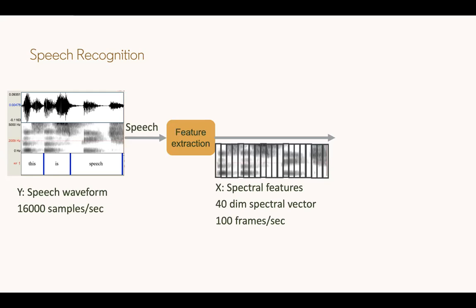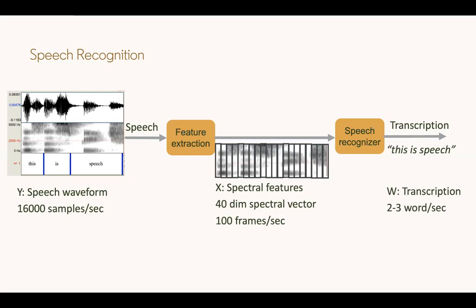We can think of the speech frame much like an image frame being the unit of a video — here, the speech frame is the unit of a speech sequence, an acoustic vector sequence. These 40-dimensional spectral vectors are actually log spectral energies. This sequence of 40-dimensional spectral vectors, which are the features of speech, are sent to a speech recognition system, which then produces the final transcript. If the speech recognition system gets this right, it would output the sentence 'this is speech,' because that is what was said.